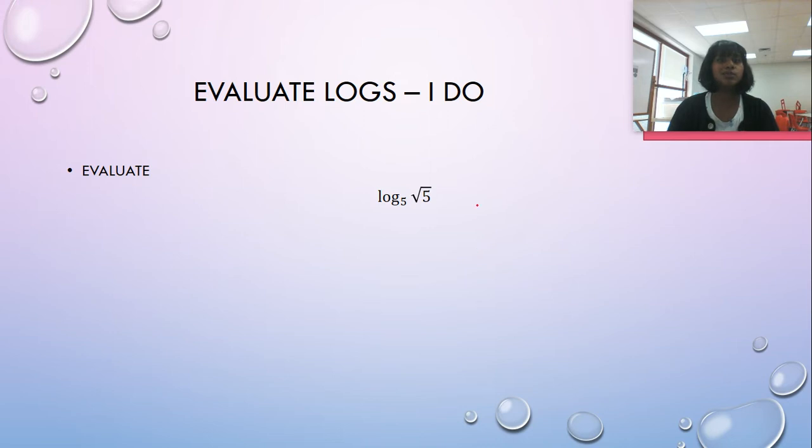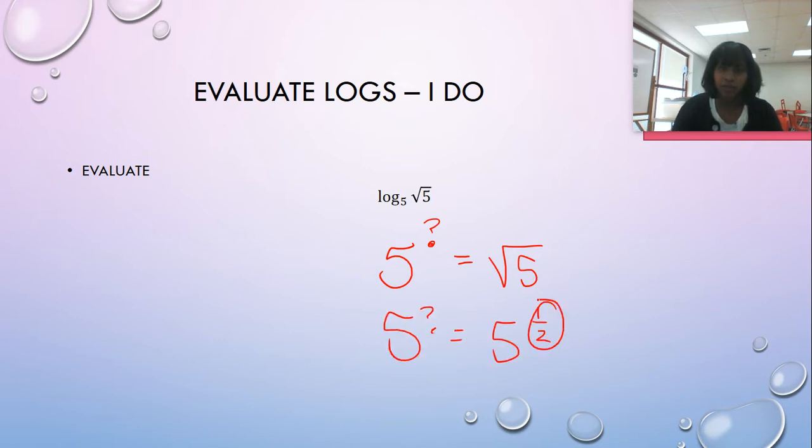What about this one? That one's kind of ugly looking, isn't it? The reality of it is it's saying five to the what is equal to the square root of five. If I rewrite the square root of five in its exponential form, I already have my answer. Five to the what is equal to five to the one half. There's my answer: one half.